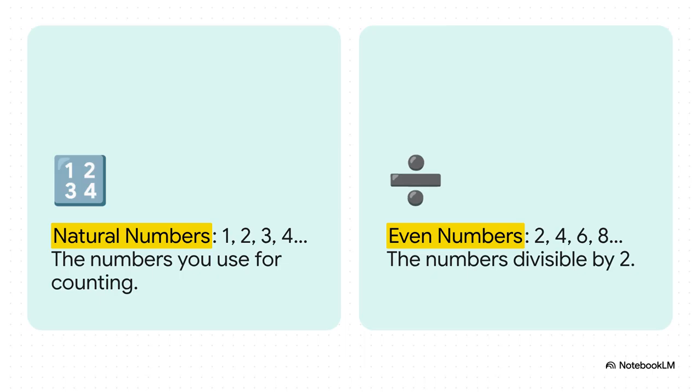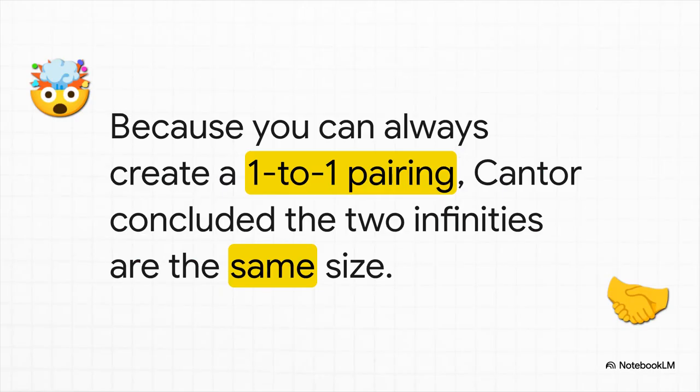What if we just try to pair them up one-to-one? You take any natural number, let's call it N, and you can always find its even partner, which is just 2N. And here is where things get really weird. Because you can always find a partner for every single number on both teams, neither side ever runs out of players. And that leads to a totally mind-bending conclusion. Their infinities are the exact same size. Yep, even though one set seems like it should be half the size of the other, in the world of the infinite, they are equal.